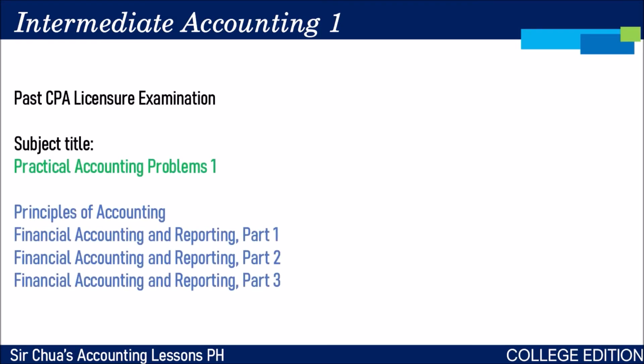In the old curriculum, the CPA board exam had the subject Practical Accounting Problems 1, covering Principles of Accounting and three parts of Financial Accounting and Reporting. FAR Part 1 talks about assets, FAR Part 2 talks about liabilities, equity, and other topics, and FAR Part 3 is college-level constructive accounting — a more in-depth discussion of the construction of financial statements, including earnings per share, single entry system, and cash to accrual basis of accounting. It is called constructive accounting because it is more about calculating and constructing accounts and financial statements.